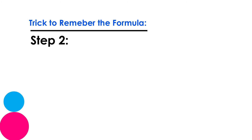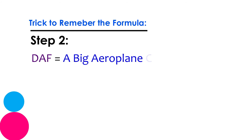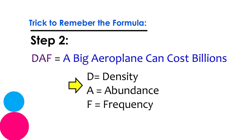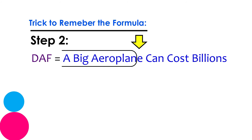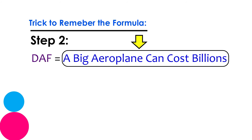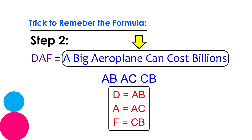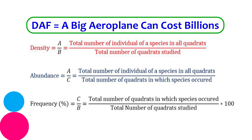Step two: write DAF equals 'A Big Aeroplane Can cause Billions,' where D stands for density, A for abundance, and F for frequency. Just take the initials of this sentence, so D equals A over B, A equals A over C, and F equals C over B. Now we already know what A, B, and C are, and I am sure you will never forget these formulas ever again.